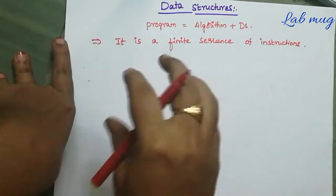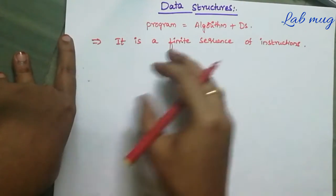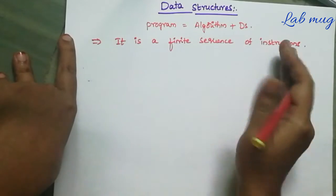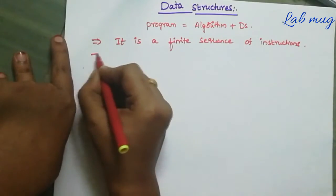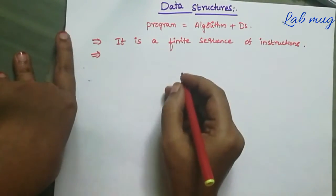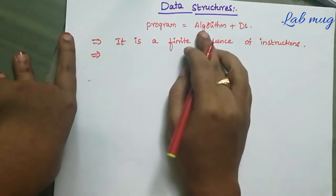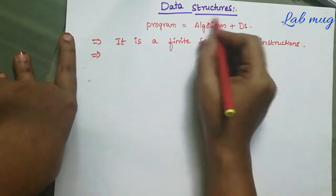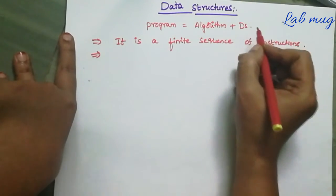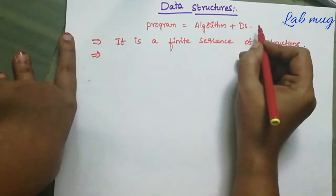So algorithm mani edhi logical ga manam algorithm ni design chaskoonam charuthunni - it is a Step-by-Step Process. Next one: Data Structure.